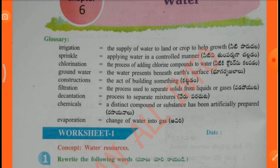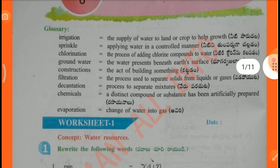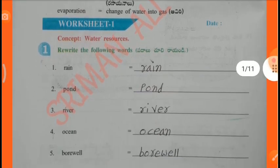Filtration — the process used to separate solids from liquids or gases. Decantation — a process to separate materials. Chemicals — a distinct compound or substance that has been artificially prepared. Evaporation — the change of water into gas. Worksheet 1 Concept: Water Resources.